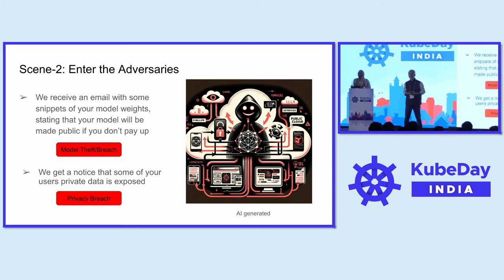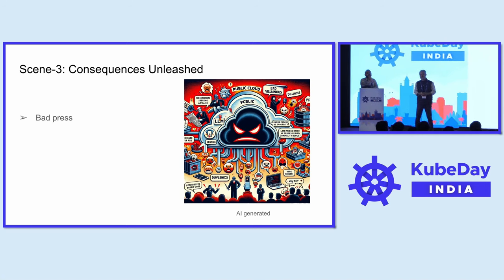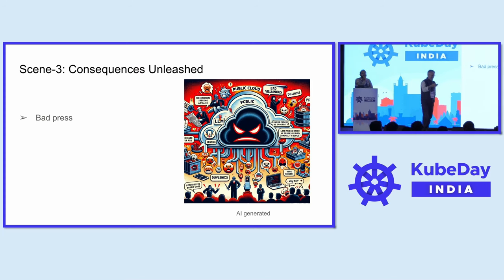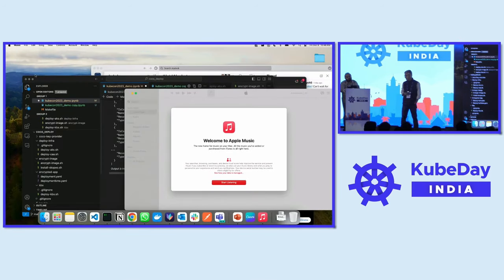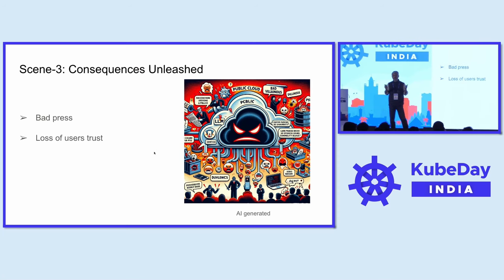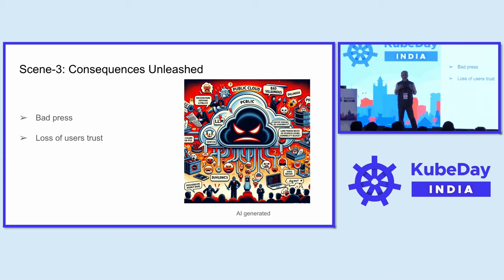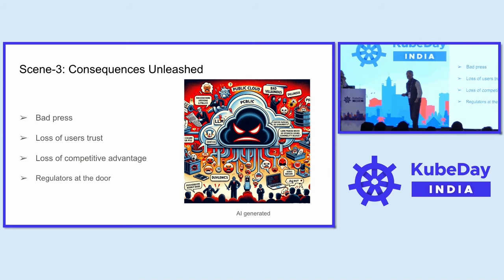Our intention is to prevent this from happening, but we have to continuously work toward it. And if it happens, what are the consequences? Bad press everywhere on social media, your company's details available publicly. Most importantly, loss of users' trust. We are talking about a mental health chatbot where people come with the trust that their data is secured and not used in an unintended fashion. Loss of competitive advantage — if your model is in the hands of someone else, your competitive edge goes away. And last but not least, regulators at the door asking how personal data or PII was exposed outside.